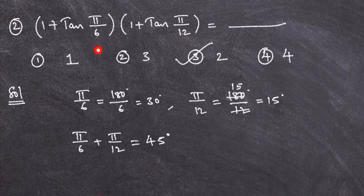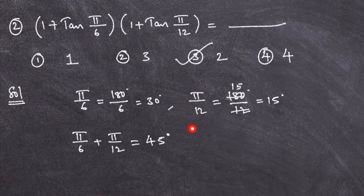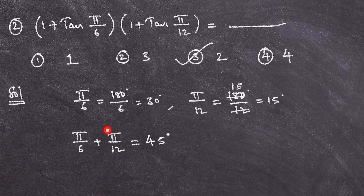Here you see π/6. Pi means 180 degrees, so 180 divided by 6 is 30 degrees — π/6 is 30 degrees. Now π/12: 180 divided by 12 is 15 degrees, so π/12 is 15 degrees. So π/6 plus π/12 is 30 degrees plus 15 degrees, which is 45 degrees.